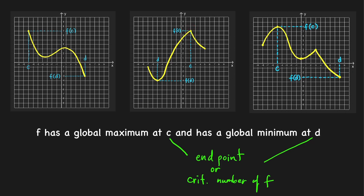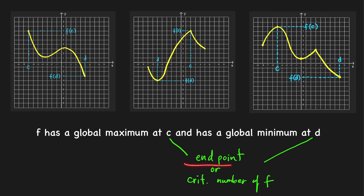In the second graph, the global minimum also occurs at a critical value d where the derivative is equal to 0, so the slope of the tangent line is 0. For the third graph, the global maximum f(c) occurs at a critical number where the derivative is equal to 0 because we have a horizontal tangent line. And the global minimum f(d) occurs at the right endpoint. Therefore, any global extremum occurs at either an endpoint or at a critical number of f.